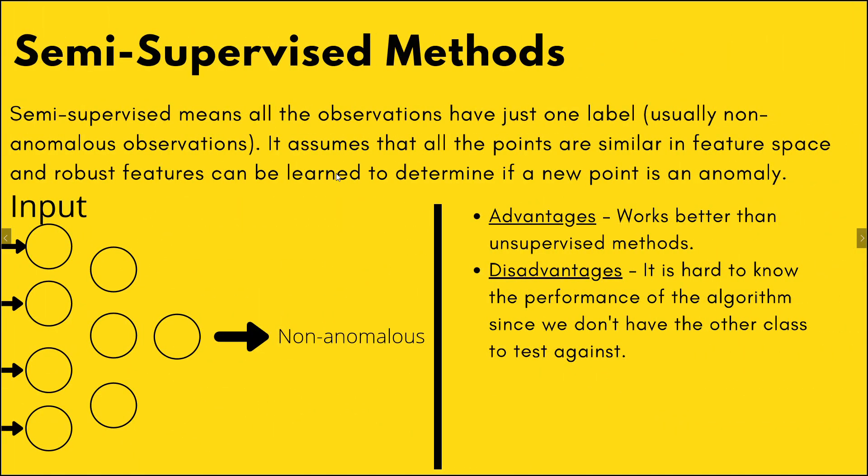Semi-supervised methods have a dataset that belongs to a single label — usually non-anomalous or normal cases. The model learns to predict one class instead of two, as in supervised algorithms. The advantage is that it works better than unsupervised methods. The disadvantage is that it does not give definite predictions, and it is hard to measure performance because you don't have the anomalous class to predict against.